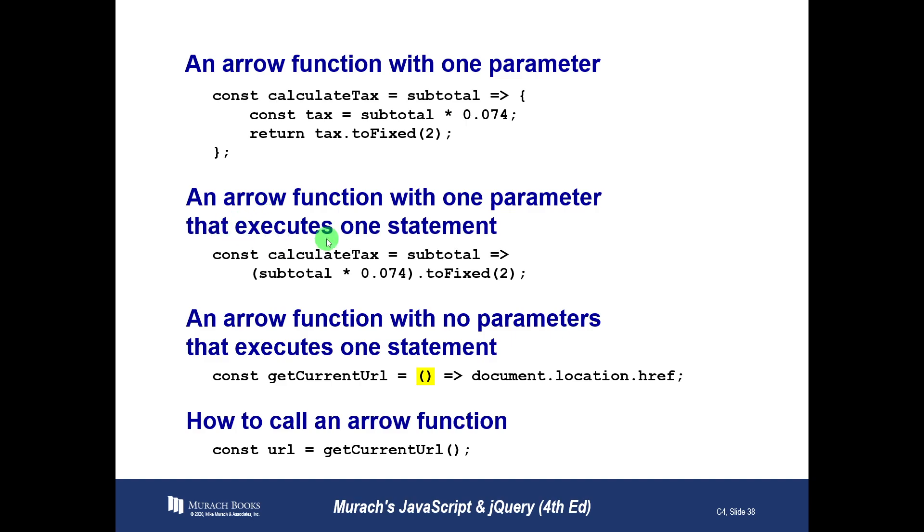Here's an arrow function with one parameter that executes a single statement. Notice here that this single statement doesn't have curly braces. That's okay. You can use the curly braces like we did up here, but you don't have to use them. If somebody comes back to this function and writes an additional line, though, that additional line won't be included in the function.